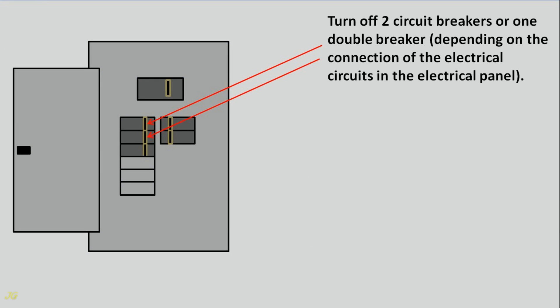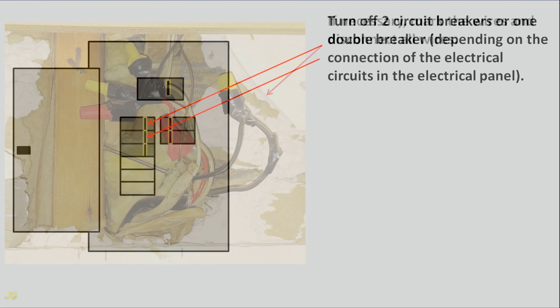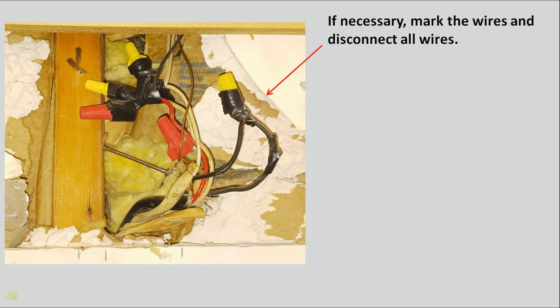Turn off two circuit breakers or one double breaker, depending on the connection of the electrical circuits in the electrical panel. If necessary, mark the wires and disconnect all wires.